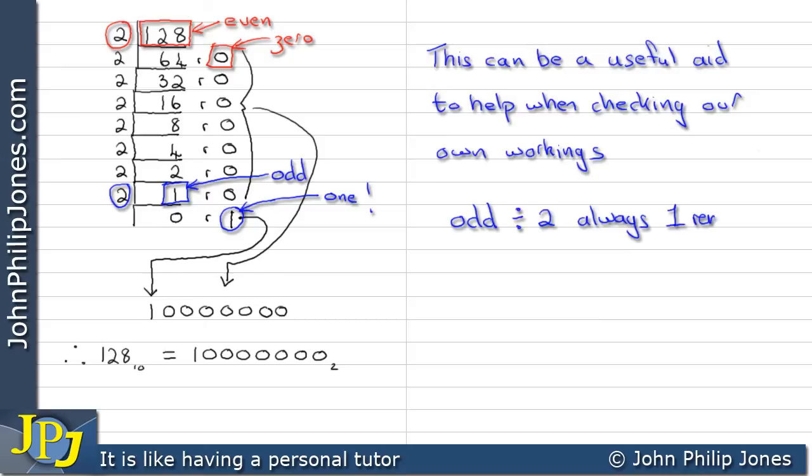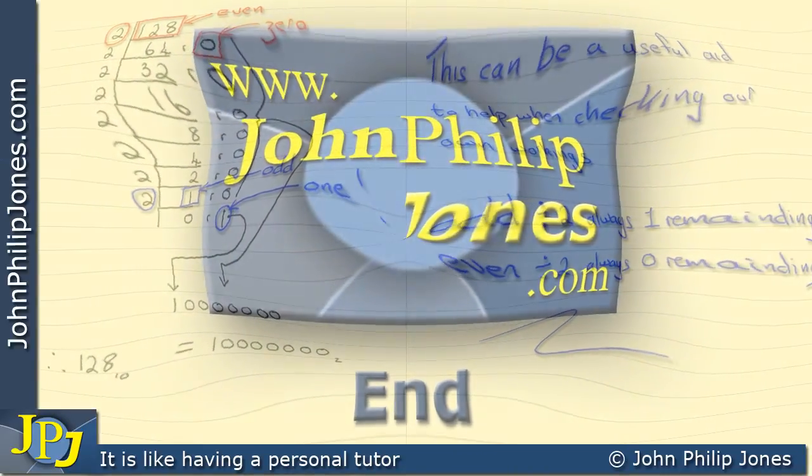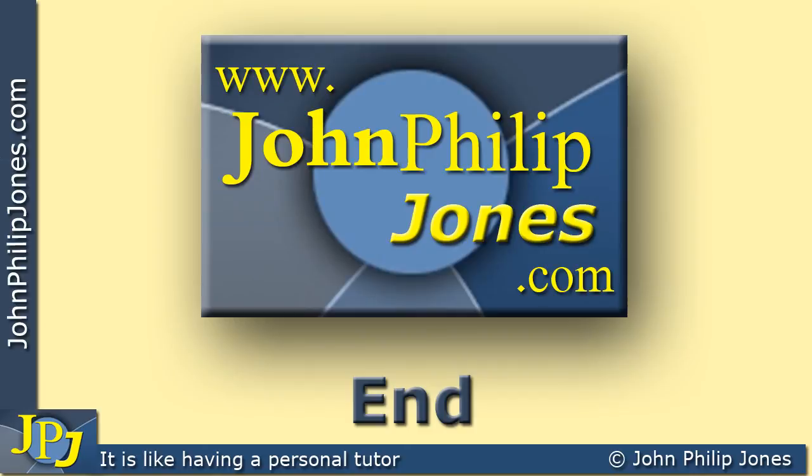In other words, odd divided by two, always one remaining. Even divided by two, always zero remaining. One final point. This has shown denary to binary conversion. Denary is often referred to as decimal by some people. So this can also be regarded as decimal to binary conversion in that case.